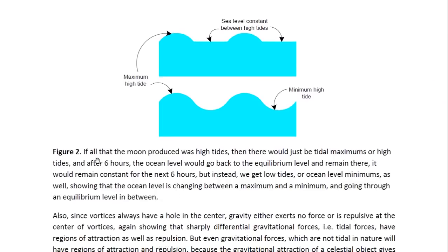This is illustrated by this diagram. If all that the Moon produced was high tides, then there would just be tidal maximums or high tides, and after six hours the ocean level would go back to equilibrium level and remain there. You would have the high tide, and then for the next six hours you would have a constant ocean level — only high tides in between constant six-hour periods of normal levels. But we do not get that. Instead, we get ocean level minimums or low tides. The tide gets lower and lower until it reaches a minimum, which means this is not the equilibrium position. The equilibrium position is somewhere in the middle. So the ocean level is changing between a maximum and a minimum and going through an equilibrium level in between.